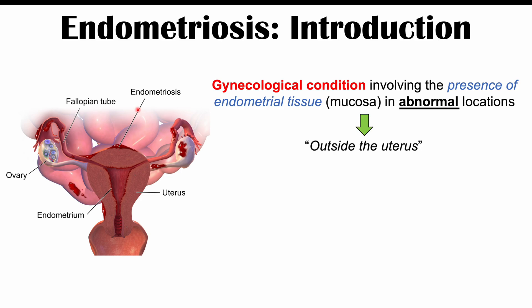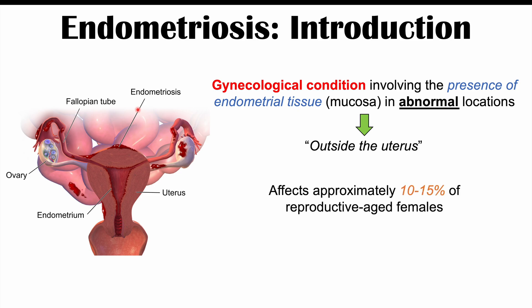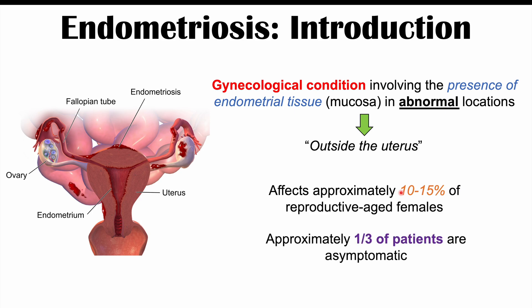This condition is relatively common — it can affect approximately 10 to 15 percent of reproductive-aged females. An important point to note is that approximately one-third of patients with endometriosis are asymptomatic, meaning they don't have any symptoms. So they have this endometrial tissue in different places outside of the uterus, but they don't experience symptoms.